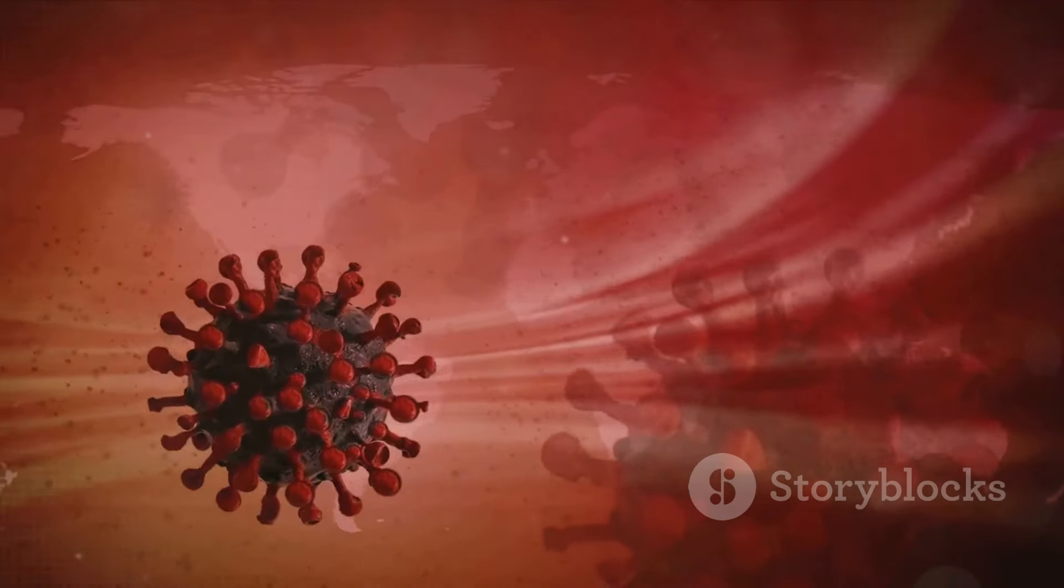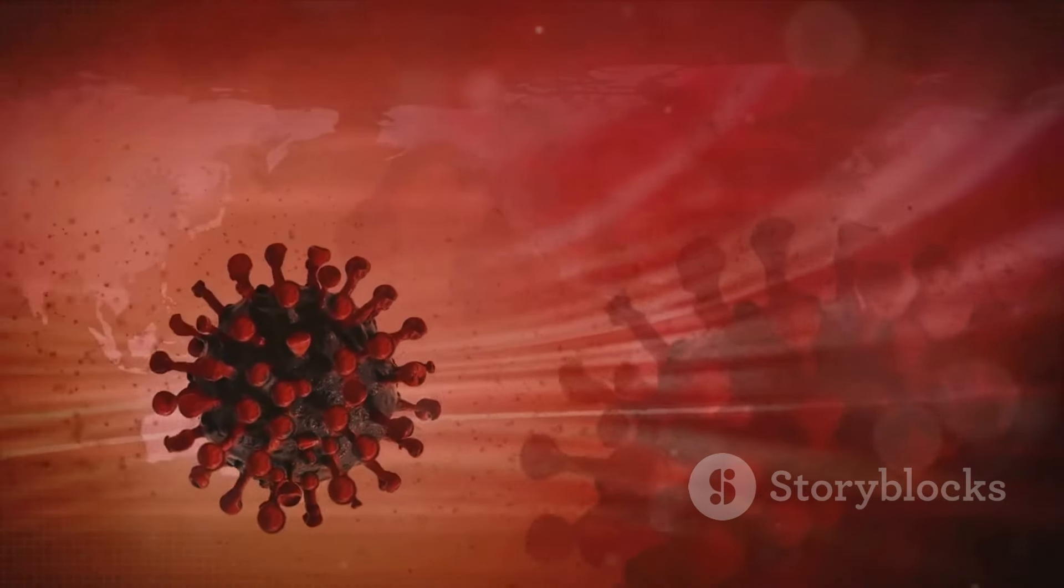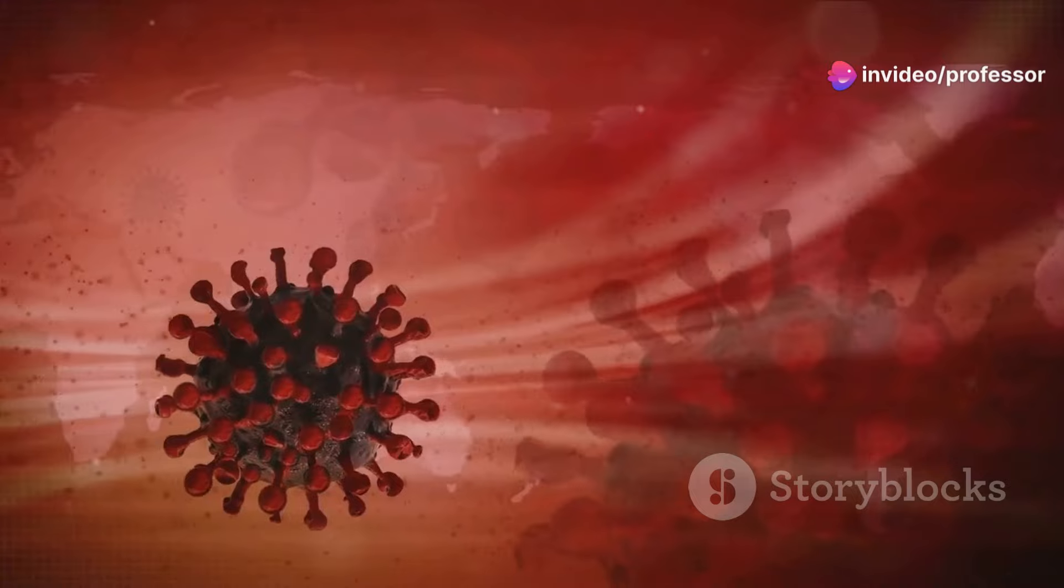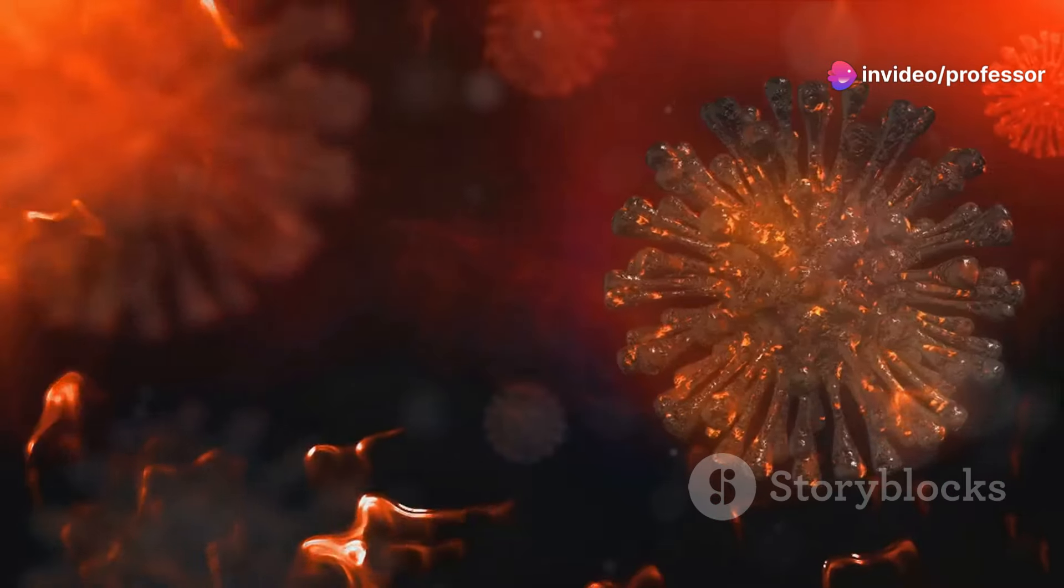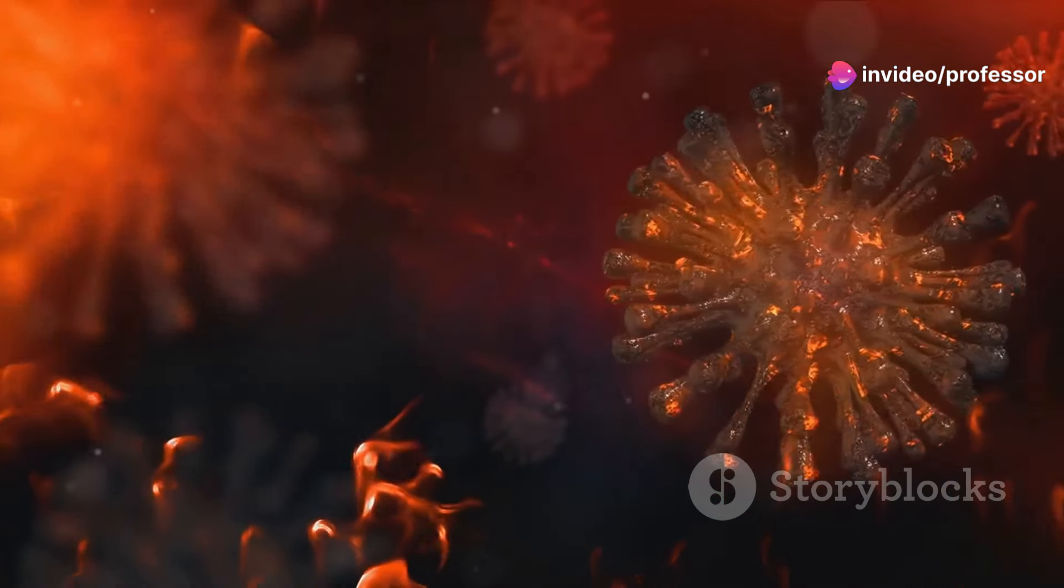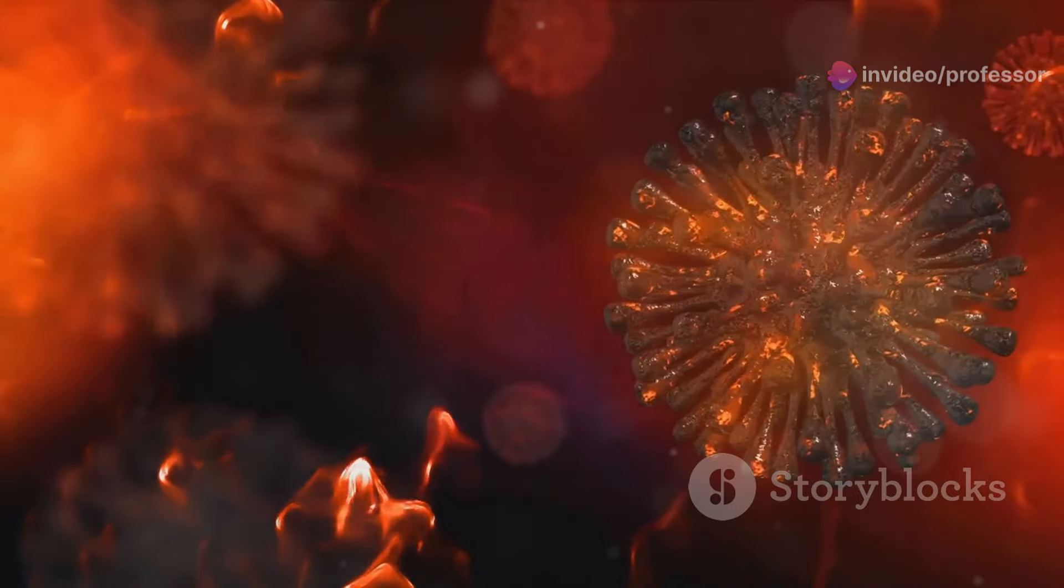This seamless fusion allows the coronavirus to slip its RNA, the blueprint of destruction, right into the unsuspecting host cell. The cell, tricked into accepting this Trojan horse, assists in pulling the viral RNA inside.